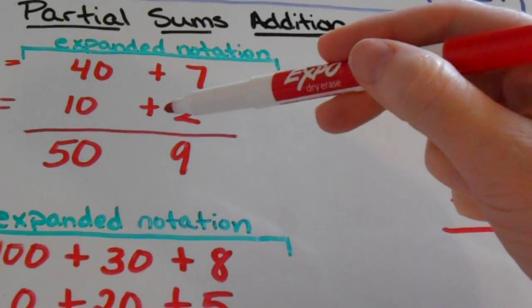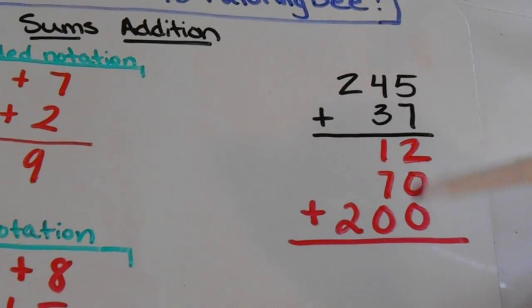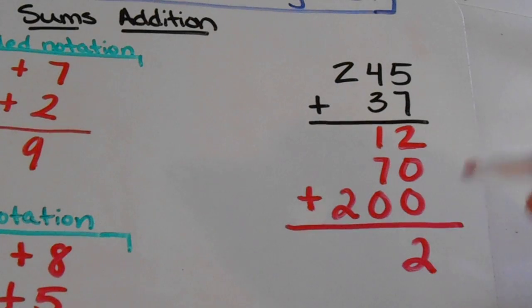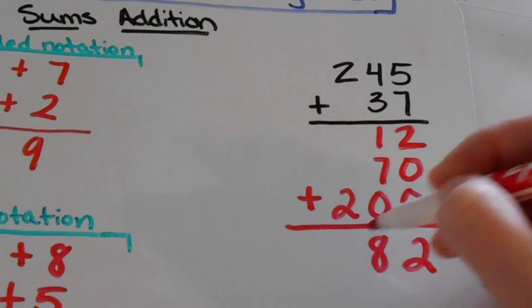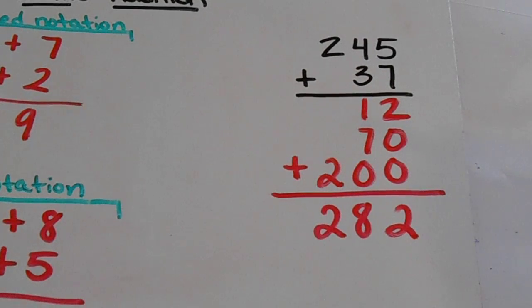So again, you can see how this type of notation will really be helpful to learn how to do this shorter version over here. And you just simply add up your sums to come up with your total answer, 282.